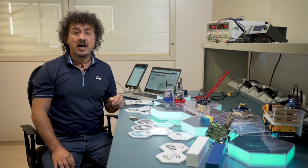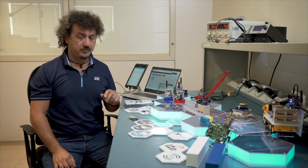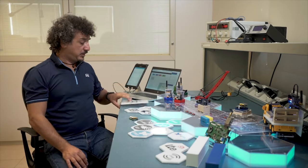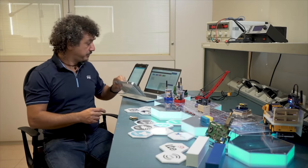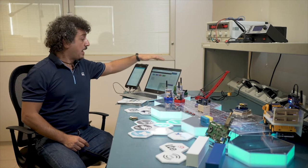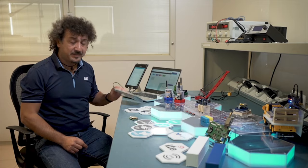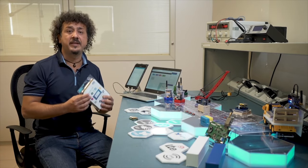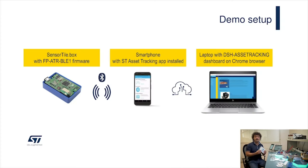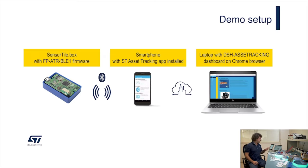Let me show how you can develop an asset tracking application by yourself. For this demo, you need a sensor tile dot box, an Android phone, and a laptop with Chrome. You should first reprogram the sensor tile box with the dedicated firmware package called FPFTR-BLI-1. Then download the asset tracking app from the Google Play Store on your smartphone and create an account for the asset tracking dashboard.